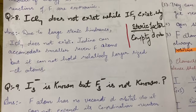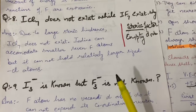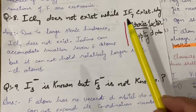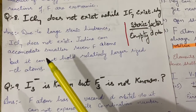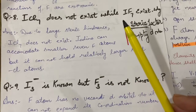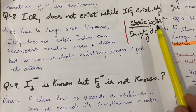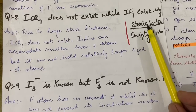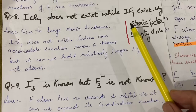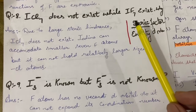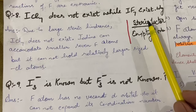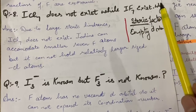The next question is: ICl7 does not exist while IF7 exists. Whenever such questions arise about why one molecule does not exist and another does, the reasons are always two: first is the steric factor. Steric means space - the crowding in space is counted. If steric crowding is very large in a molecule, that molecule will be unstable and will not exist.